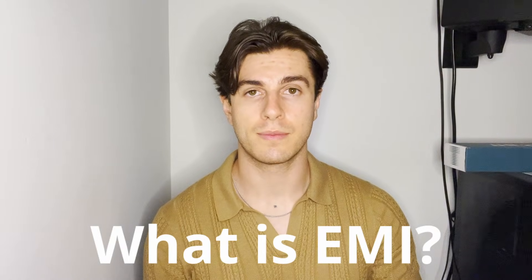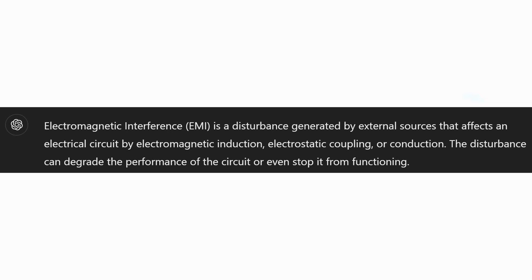The first thing I want to talk about is: what is EMI? If you ask ChatGPT to define EMI, it will tell you it is a disturbance that is generated by external sources that affects an electrical circuit through electromagnetic induction, electrostatic coupling, or conduction. While I think that description is very accurate, I don't think it's particularly helpful to someone who is a beginner.